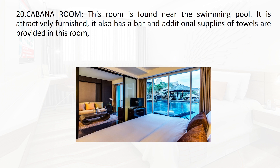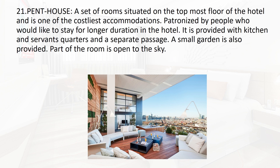Next is the cabana — a room found near the swimming pool, attractively furnished, and also featuring a bar and additional supplies of towels. The main aspect of the cabana room is that it must be located near the swimming pool, which is why extra bar towels are provided.